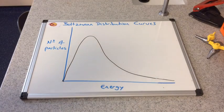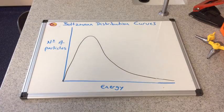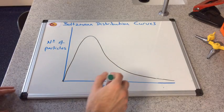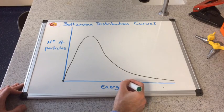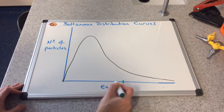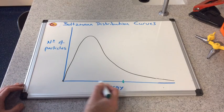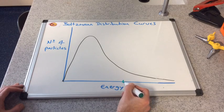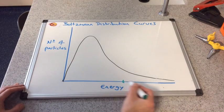So if we bring in the idea of activation energy into the Boltzmann curve. If I say that the minimum amount of energy needed for a successful collision is here, any collisions with this amount of energy, it's not enough so the reaction doesn't take place. Collisions that occur past this green line will cause a reaction.